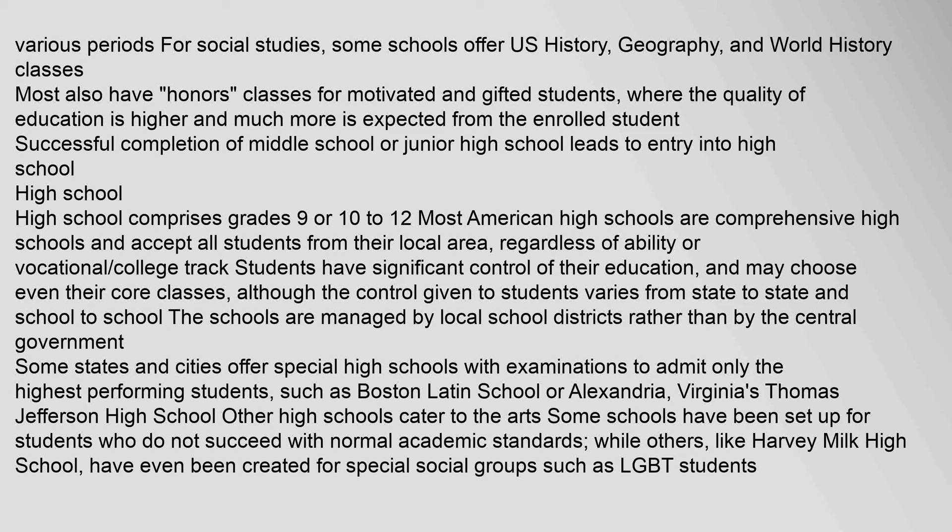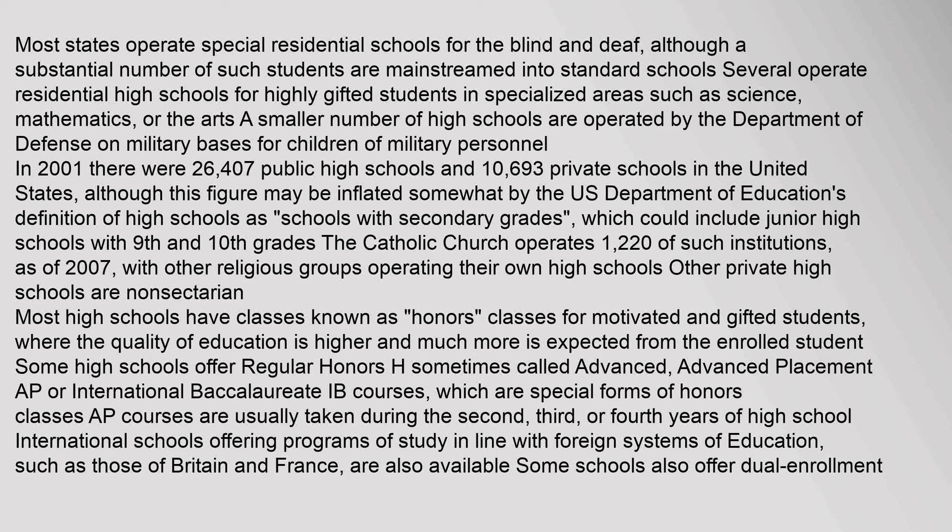High school comprises grades 9 or 10 to 12. Most American high schools are comprehensive high schools and accept all students from their local area regardless of ability. Vocational and college track students have significant control of their education and may choose even their core classes, although the control given to students varies from state to state and school to school. The schools are managed by local school districts. Some states and cities offer special high schools with examinations to admit only the highest performing students, such as Boston Latin School or Thomas Jefferson High School in Alexandria, Virginia. Other high schools cater to the arts, or to students who do not succeed with normal academic standards.